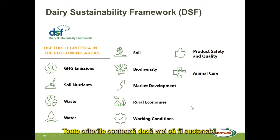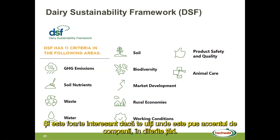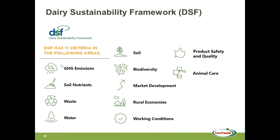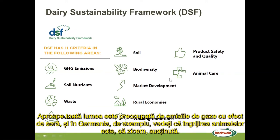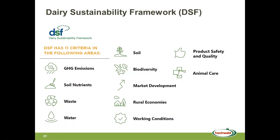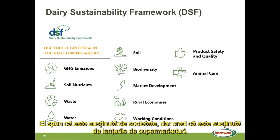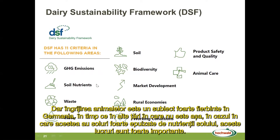It's very interesting to look at where the emphasis is laid by companies across different countries. Almost everybody is caring about greenhouse gas emissions. In Germany, animal care is a very hot topic — pushed by society, but I think pushed by supermarket chains. Whereas in some other countries where soils are very depleted, soil nutrients and related things are very important.